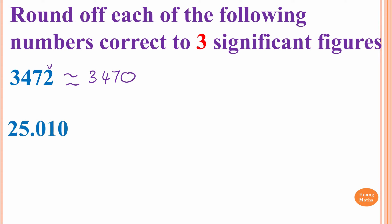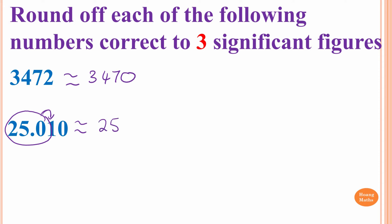Next one. Zero at the end of a decimal number is significant, so both the first and last digits are significant, and everything in between is also significant. That gives 1, 2, 3, 4, 5 — five significant figures. We want 3, so we go up to 25.0. We check the number after 0, which is 1 — less than 5, so we round down. The answer is 25.0.